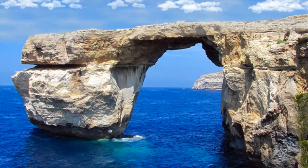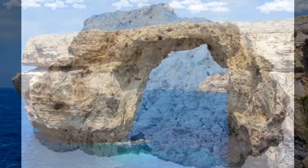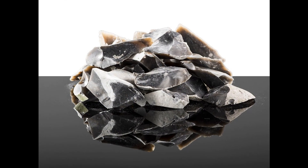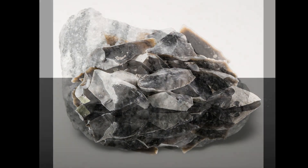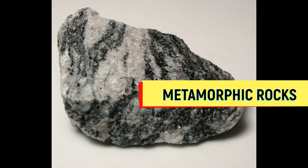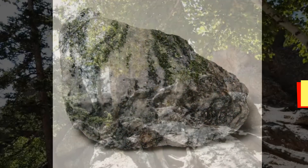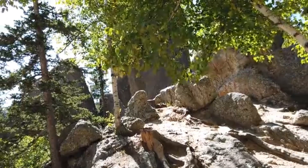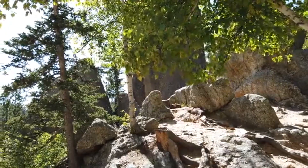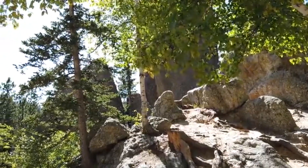Chemical sedimentary rocks like limestone, halite, and flint are formed when dissolved minerals are precipitated as the water evaporates. Metamorphic rocks are rocks that have been changed from their original form by immense heat or pressure.